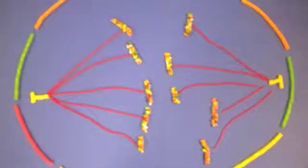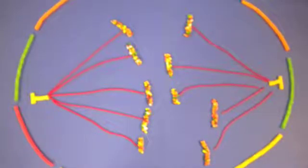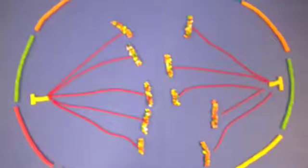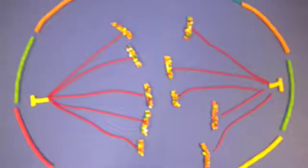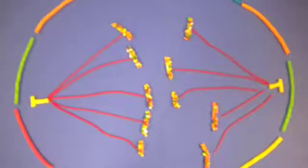During anaphase II, the breakdown of proteins holding the sister chromatids together at the centromere allows the chromatids to separate. The chromatids move toward opposite poles as individual chromosomes.